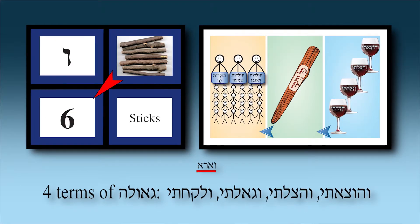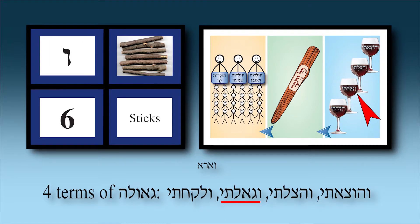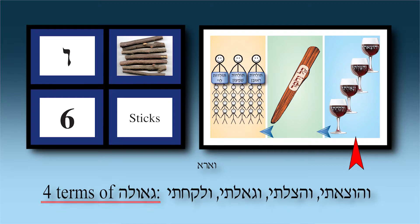Now we're in Parashat Va'era, continuing chapter six. The simon is 'sticks.' In chapter six there are three parts. The first picture depicts four cups of wine — on each cup you'll see one of the four words of ge'ulah, the four terms of redemption mentioned in this chapter. As you know, on Leil Pesach we drink from four cups based on those four words. The second part shows a stick with 'Kal V'chomer' written on it, reminding us that Moshe is again asked by HaKadosh Baruch Hu to go to Pharaoh.